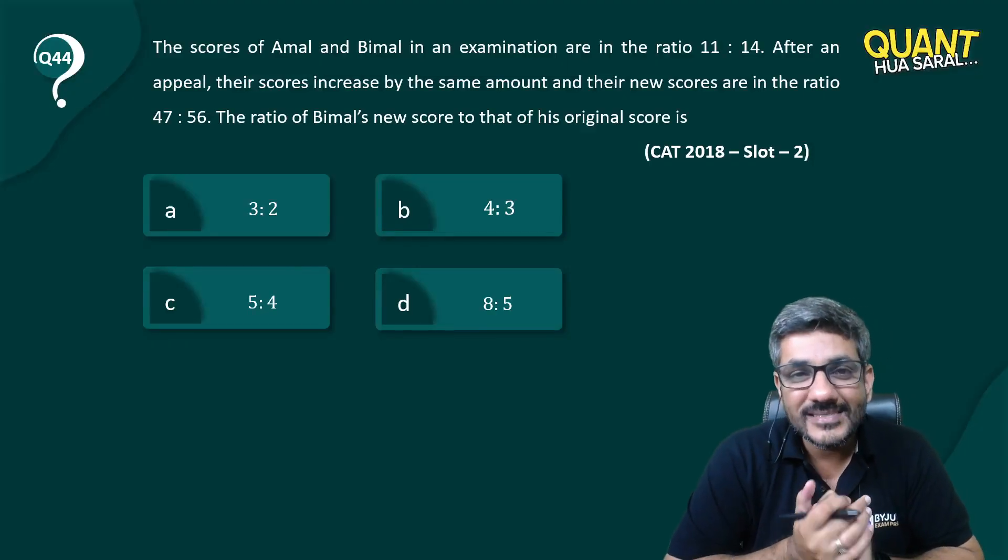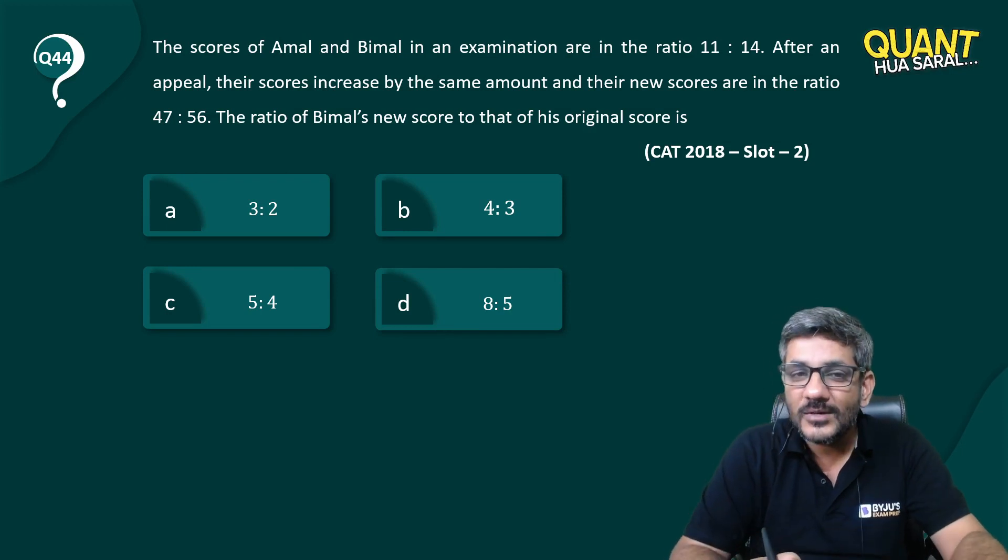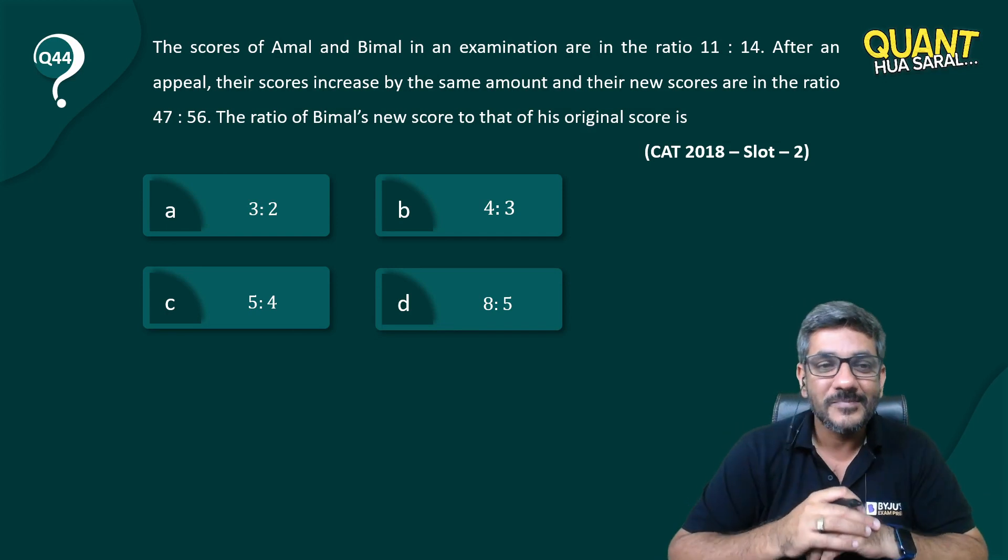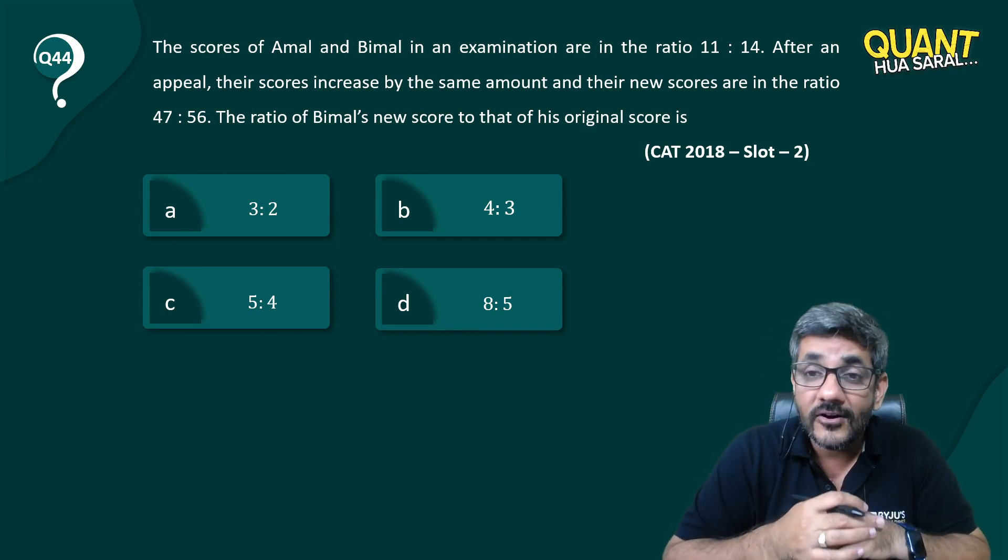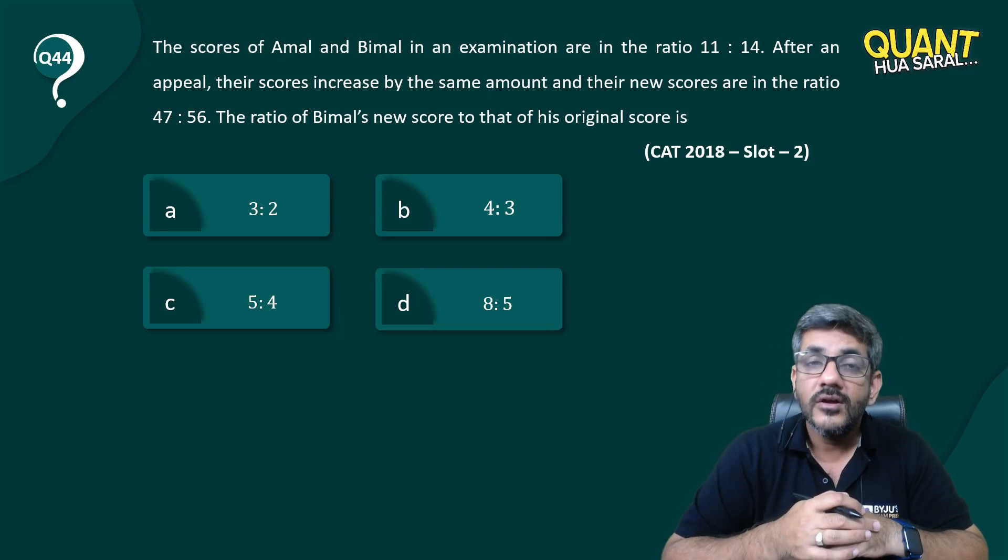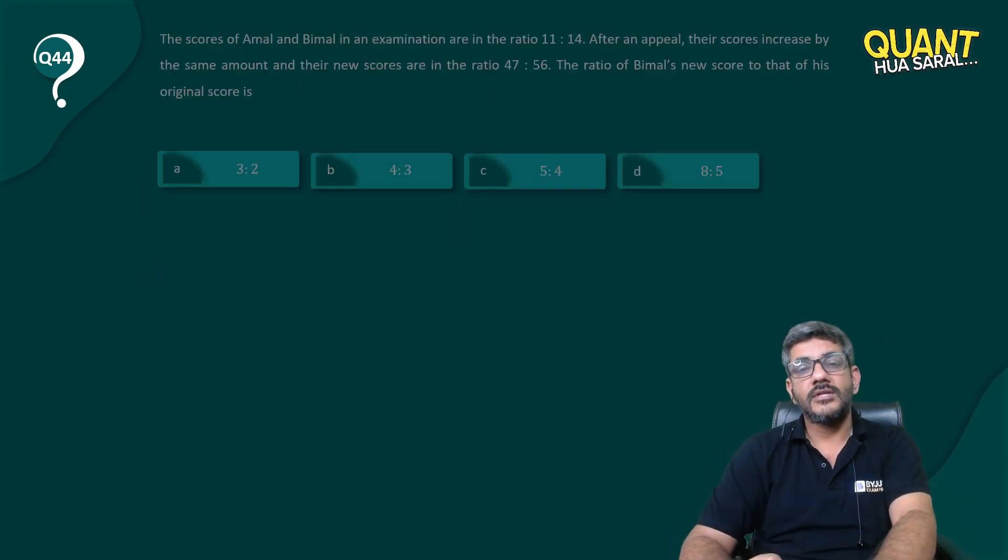Hey everyone, so once again we are back with question number 44 today. Let's have a look at this question from ratios, my favorite topic when it comes to aptitude. The scores of Amal and Bimal in an examination are in the ratio of 11 and 14. After an appeal, their scores increased by the same amount and their new scores are in the ratio 47 is to 56.